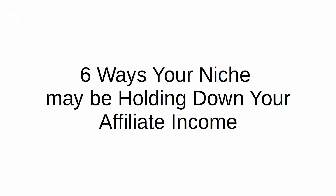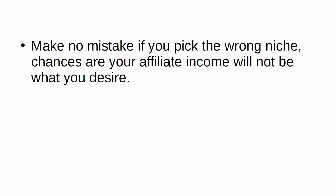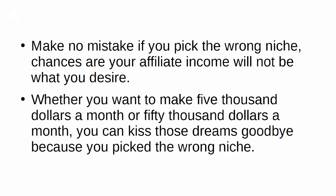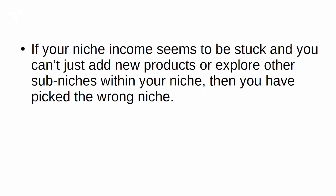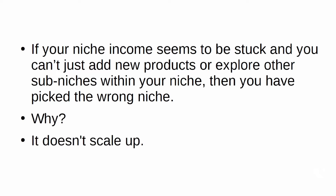Six ways your niche may be holding down your affiliate income. Make no mistake — if you pick the wrong niche, your affiliate income will not be what you desire, whether you want to make $5,000 or $50,000 a month. Here are six ways to find out if your niche is getting in the way. Lack of scalability: if your niche income seems stuck and you can't add new products or explore sub-niches, then you picked the wrong niche — it doesn't scale up.